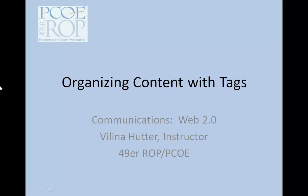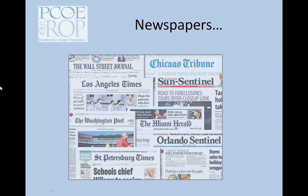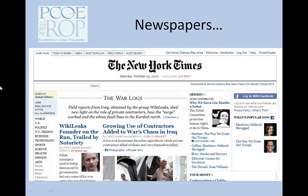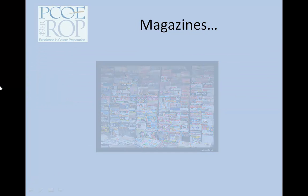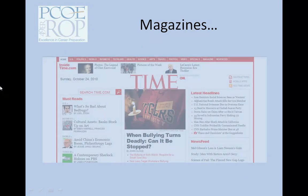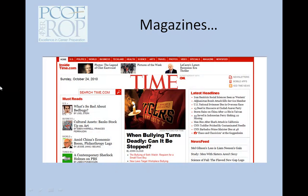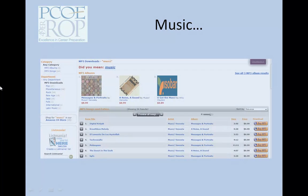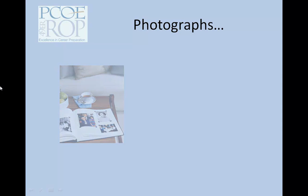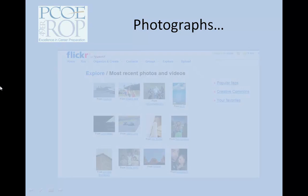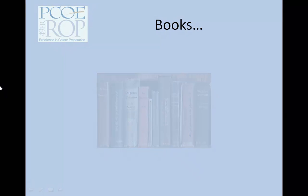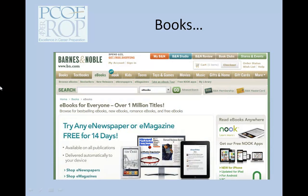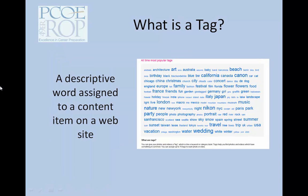Organizing content online with tags. Over the last decade, much of the information formerly stored in physical formats has been converted to digital information and stored online. Such physical information that has now been digitized includes newspapers, magazines, music, photographs, books, and even videos. As more and more information is stored online, it becomes more and more important that the information can be easily retrieved as needed.